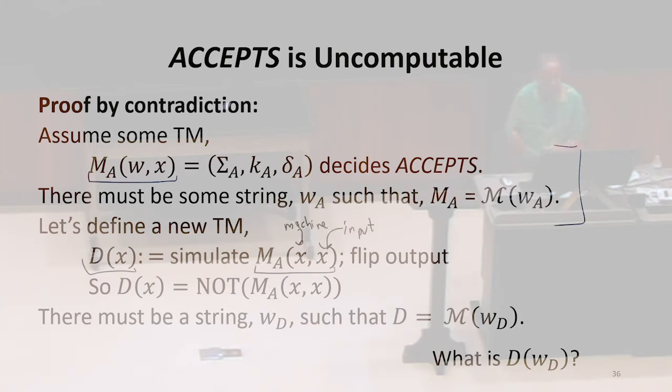And then instead of outputting what that outputs, we're going to just flip the output. So if it would accept, we're going to reject. Meaning if it would produce a 1 as output, we're going to output a 0. If it would produce something other than a 1, including running forever, we're going to output a 1.